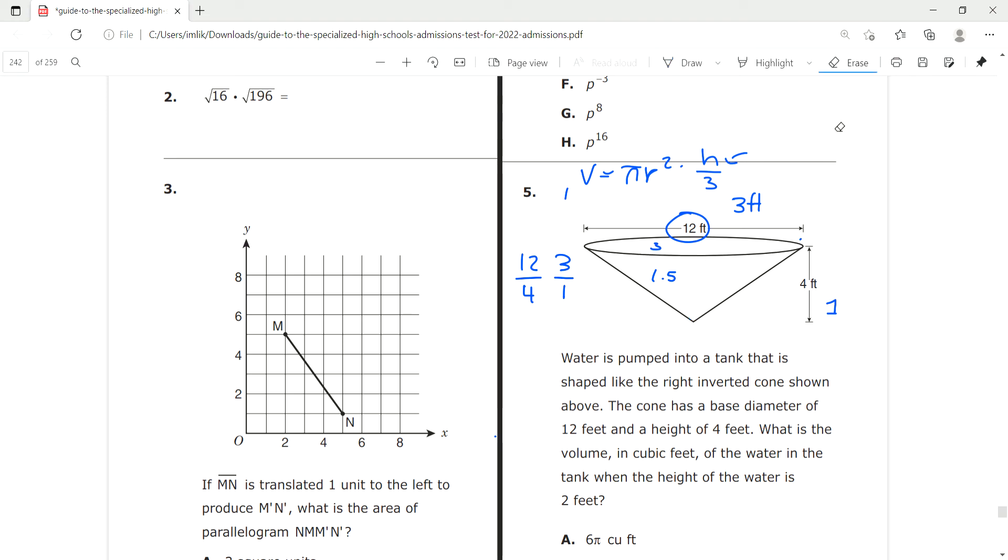So at 2 feet right here, our proportion was 3 over 1. If we multiply the bottom and the top by 2, that gives us 2 feet, which gives us 6 as our diameter. So at 2 feet our diameter is going to be 6. The radius is half of the diameter. 6 divided by 2 is 3. So we know r equals 3 and h equals 2. We can now solve.